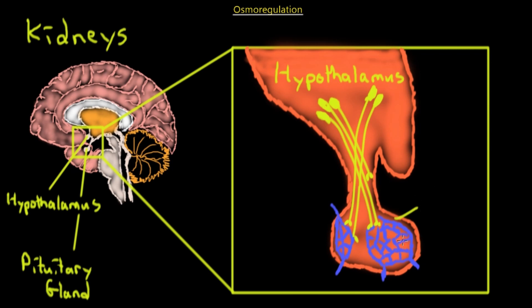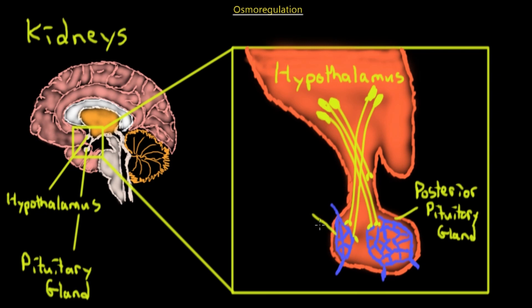On the right side of the diagram we have the posterior pituitary gland, and on the other side we have the anterior pituitary gland.